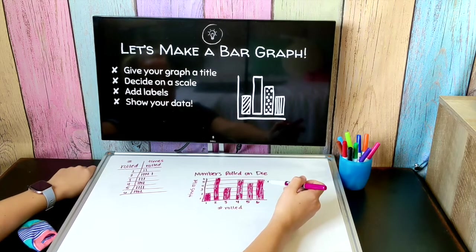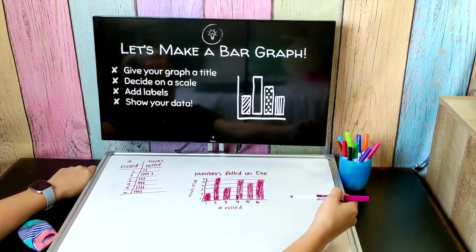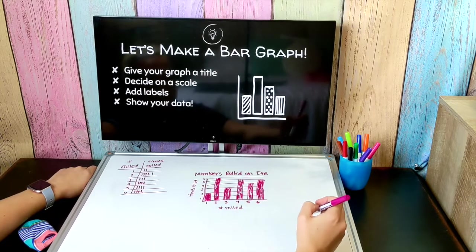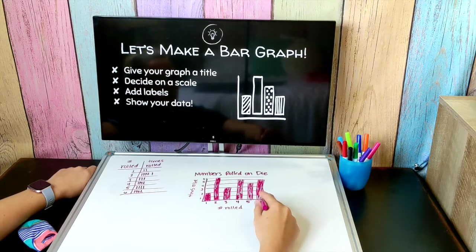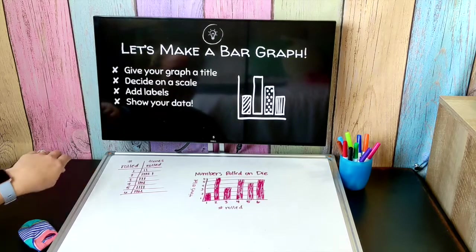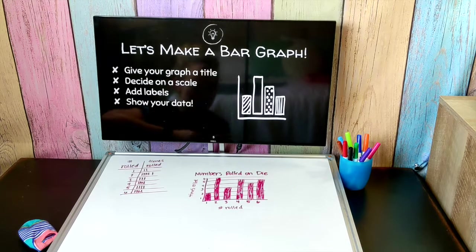You see when you display data in a visual way like this it makes it so much easier to see and to interpret. It's very quick and easy for me to see I rolled ones the least, I rolled twos the most, I rolled just as many sixes as I did fours. When you create a graph it makes it really easy to see the information.